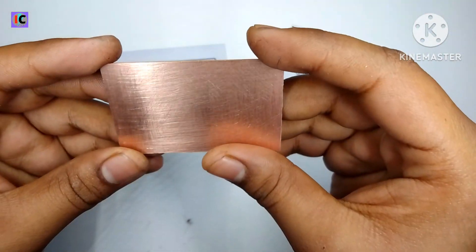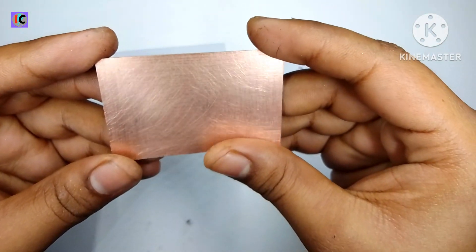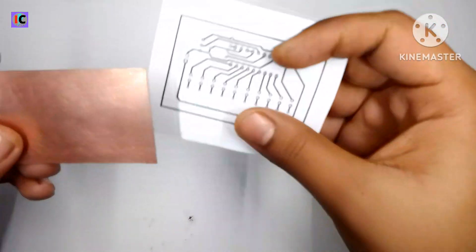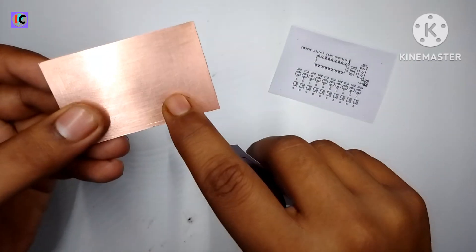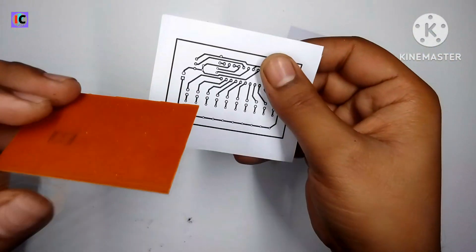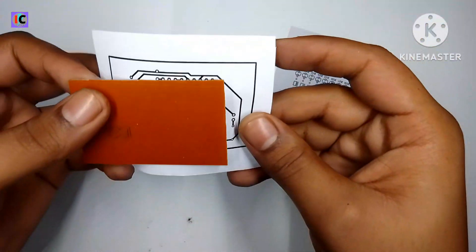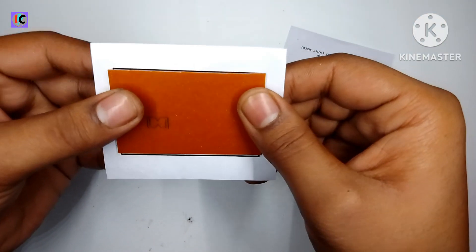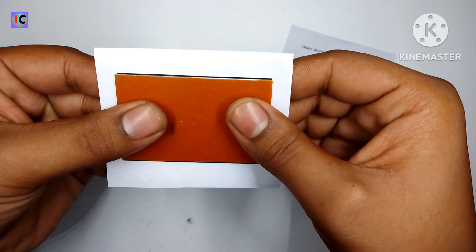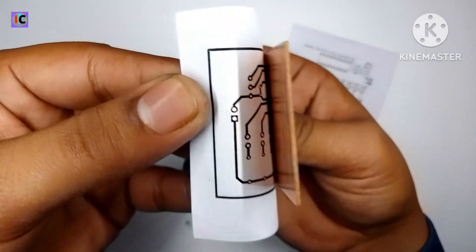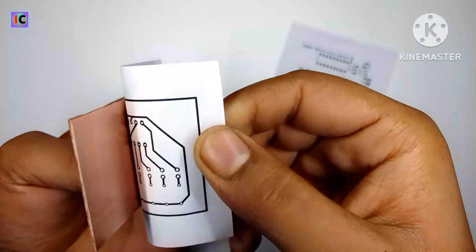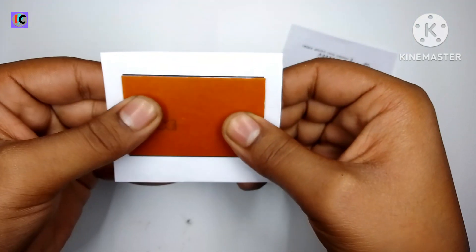I am cutting the copper board edge according to my PCB layout. Before using this method, please clean the whole copper board with a scrubber so that the mask is properly layered on the copper. Align the bottom side layer of the PCB to the copper.